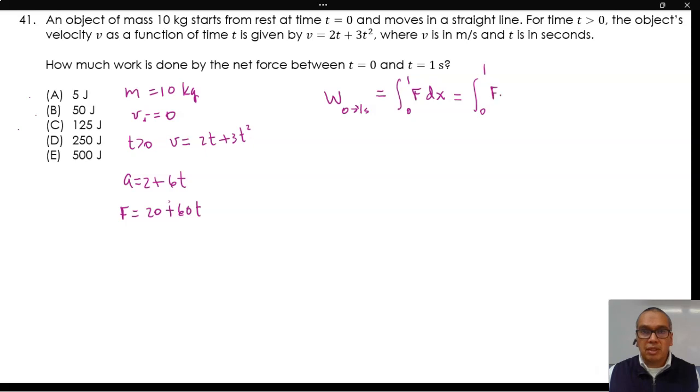Force times dx dt times dt. If you remember, the derivative of the position relative to time is the velocity. So the velocity can be substituted in the integral and we have the integral from 0 to 1 of 20 plus 60t times 2t plus 3t squared dt.